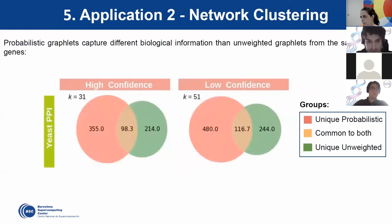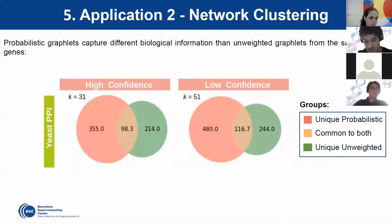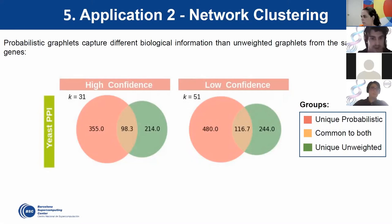We also checked if this information was more specific by calculating the mean level of GO terms. Probabilistic graphlets in green capture terms uniquely, while the intersection is shown separately and classic graphlets in orange. Probabilistic graphlets capture much more specific information compared to traditional graphlets. Finally, we checked if the GO terms differentially captured by each technique came from different genes — probabilistic graphlets capture information from different sets of genes, suggesting both technologies can be used in a complementary way.